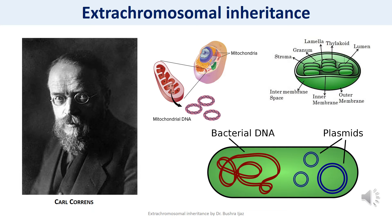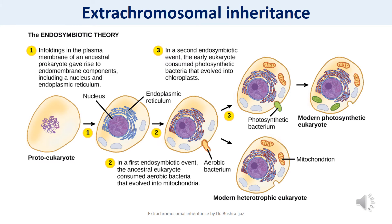The extra chromosomal determinants may reside in the plastids or other cytoplasmic components. While the term genome includes all chromosomal hereditary determinants, the extra chromosomal hereditary factors are subdivided into plastosomes, which are factors present on the plastids, and plasmasomes, which are factors in the cytoplasm. Extra chromosomal inheritance was first identified and reported by a scientist named Boris Ephrussi and was actually identified in yeast during 1949.